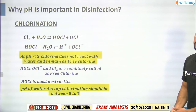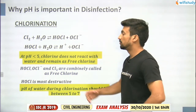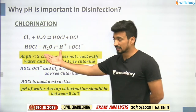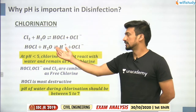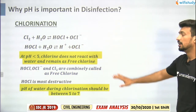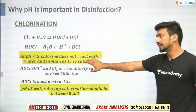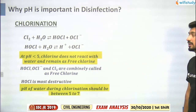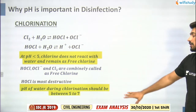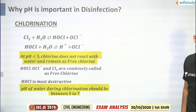pH is important in disinfection because at lower pH, chlorine is present in the form of HOCl and OCl⁻. HOCl reacts with water releasing H⁺ and OCl⁻. If pH is less than 5, the chlorine disinfection behavior changes significantly.